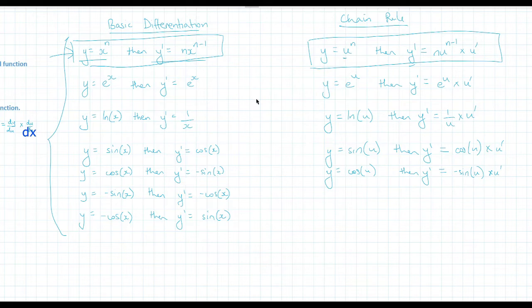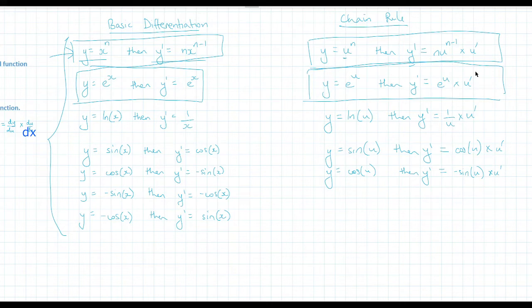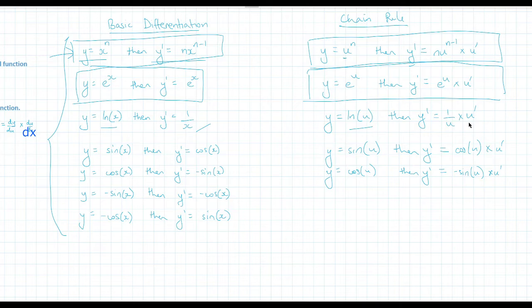That rule follows through for everything else. So y equals e to the x, and its derivative is also e to the x — this is a basic rule. So in chain rule, if we had e to the u, that would derive to e to the u multiplied by the derivative of u. We also know ln x derives to 1 over x, so if our function was y equals ln u, then that would derive to 1 over u multiplied by u dash.